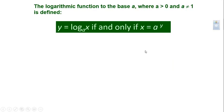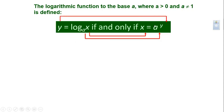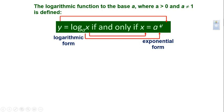We have y = log base a of x if and only if x = a to the y. So the bases are the same; the input of one is the output of the other. We have the logarithmic form, which typically has the word log with a base indicated, and the exponential form, which is the base raised to an exponent.